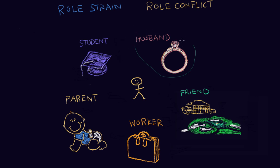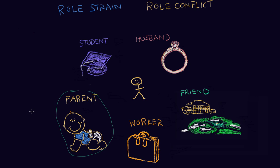In another scenario, let's say a week later he has a paper to do for school, but he finds out that his son was injured and may need to go to the hospital. In this case, his status as a parent may take precedence over his status as a student because he's concerned for his child's health.